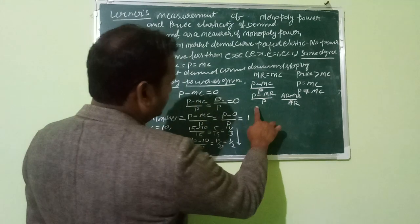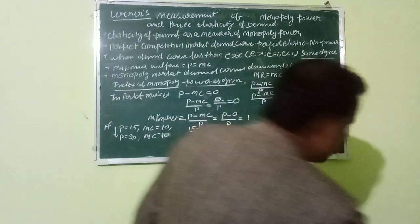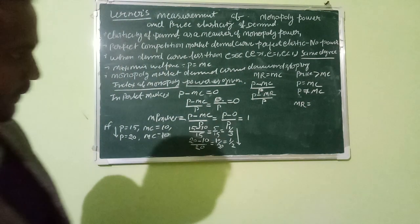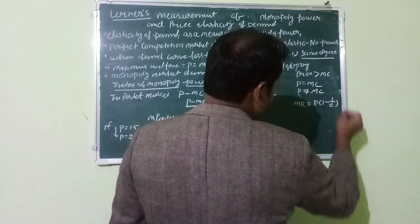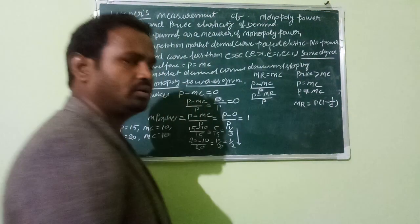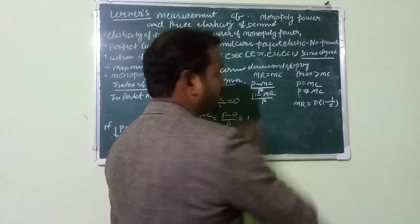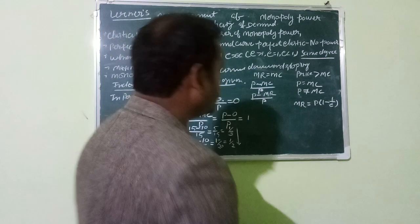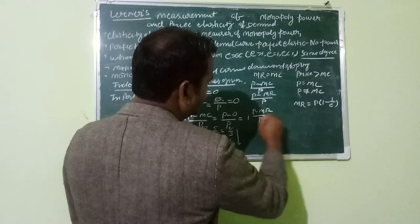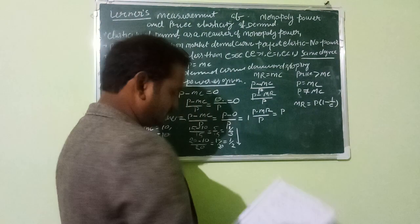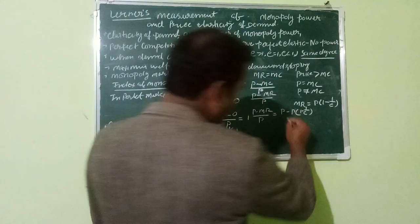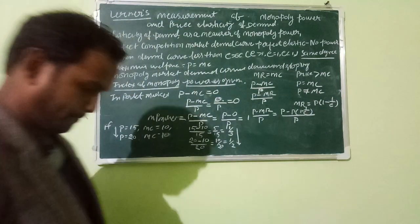We can also express the Lerner index using marginal revenue. We know that marginal revenue MR = P(1 - 1/e), where e is the price elasticity of demand. This is a formula from the previous chapter. If elasticity is given, we have MR, so we can write price minus MR, and then simplify the expression using the MR formula.